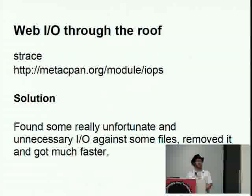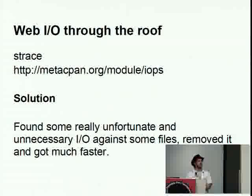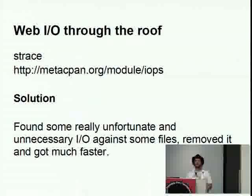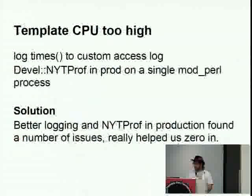Another time, our web I/O was through the roof. I found it by following through strace and seeing where it was writing things from. I found it useful to use a little applet I wrote called IOPS, which just scrapes strace and turns all the relatively inscrutable file descriptor names back into actual file names, so I could see where everything was actually coming from and going to instead of having to parse raw numbers like 42 and 3.